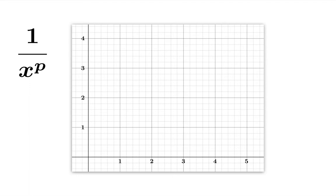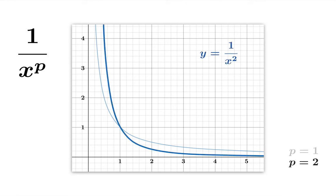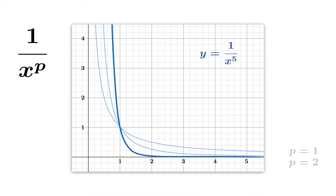Let's get acquainted with these functions first. The simplest case is p equals 1 — the reciprocal function, whose graph we know and love. We can also look at 1 over x squared, the case p equals 2, and then 1 over x to the fifth, the case p equals 5. As p goes to infinity, on the region to the right of 1, the graph gets squished towards the x-axis.